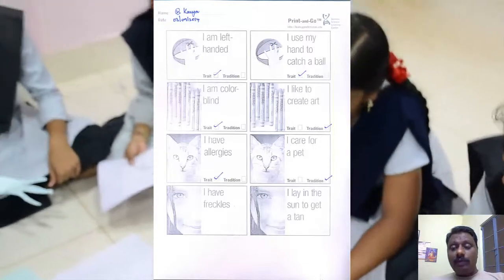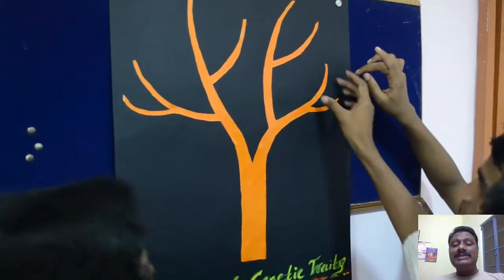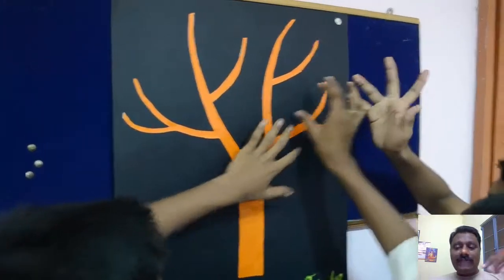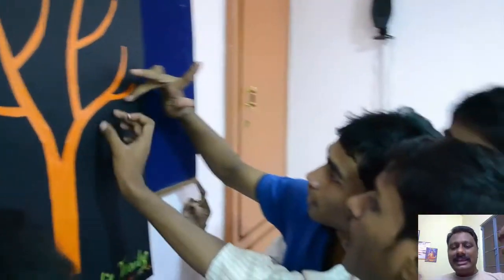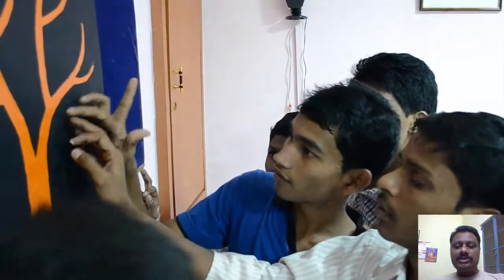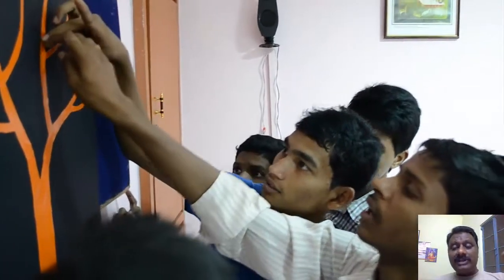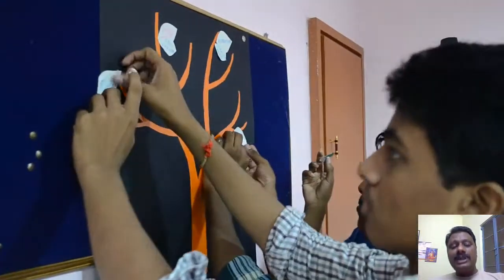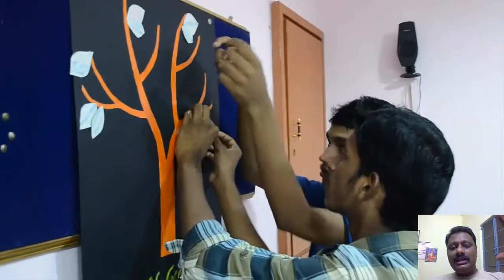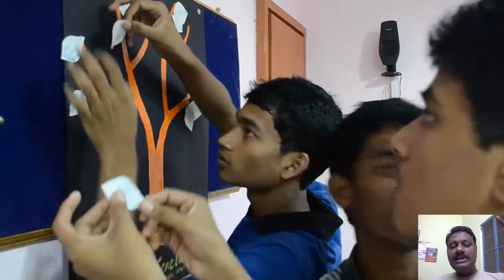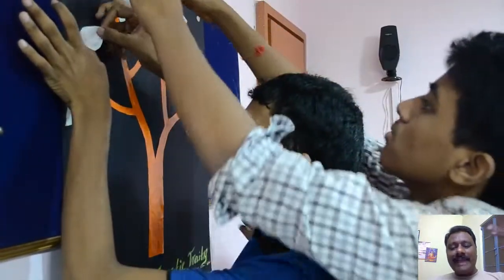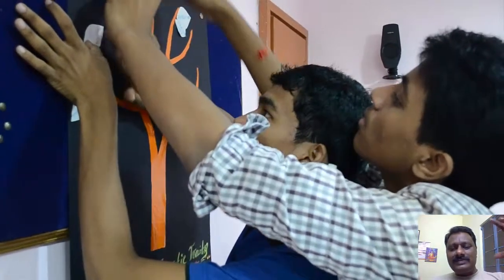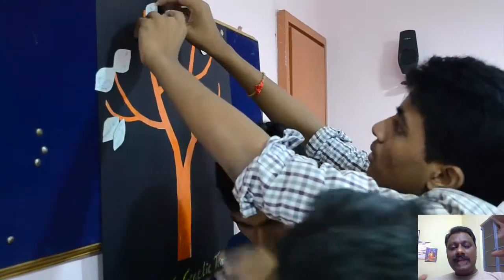Students can distinguish between a trait and a tradition, developing knowledge to discriminate what is right and what is wrong. All children then construct a class trait tree based on the traits they have, reflecting those which are being inherited in that particular manner.